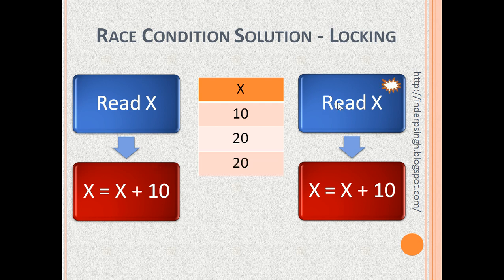Now, the second process places the lock on x. It reads x. x is read as 20. Then, the second process increases x by 10. So, x becomes 30, which is the correct result.